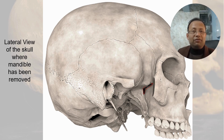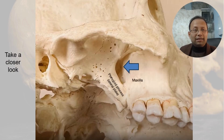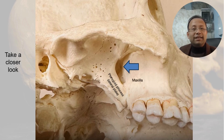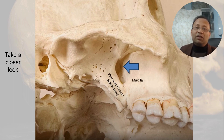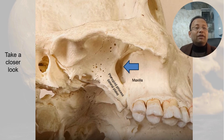This is the lateral view of the skull where the mandible has been removed. There is an opening between two bones — anteriorly it is the maxilla, while posteriorly it is the lateral pterygoid plate of the sphenoid bone. This opening is called the pterygopalatine fissure. It is the door of the pterygopalatine fossa.